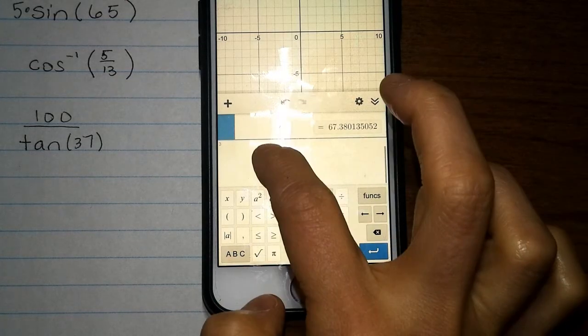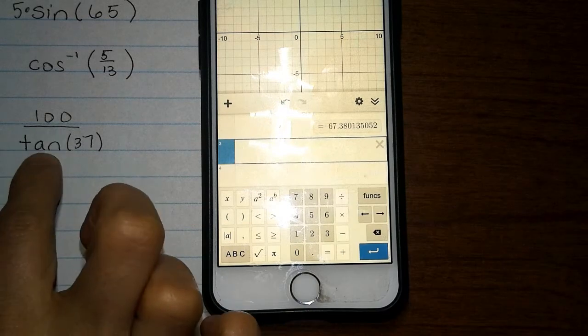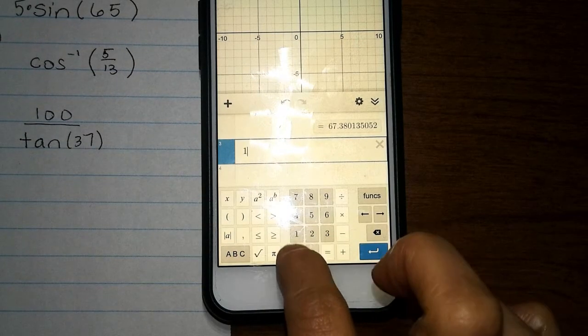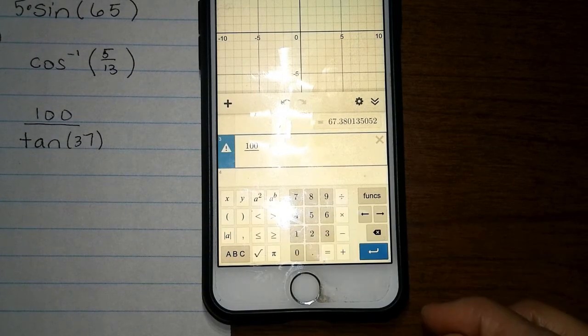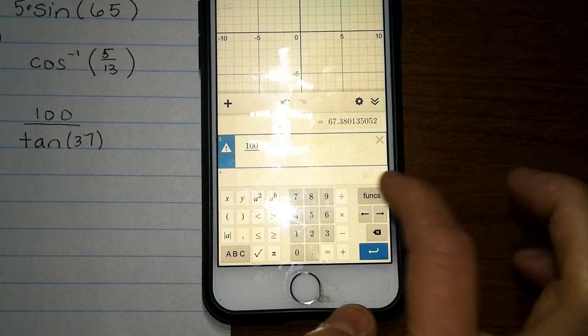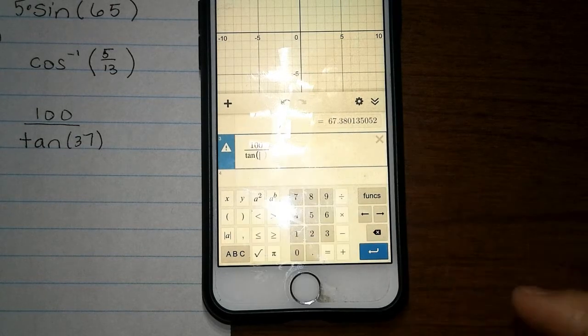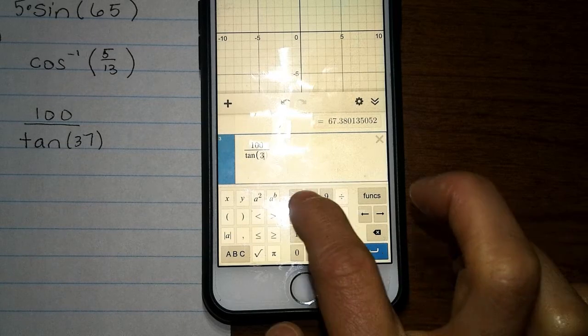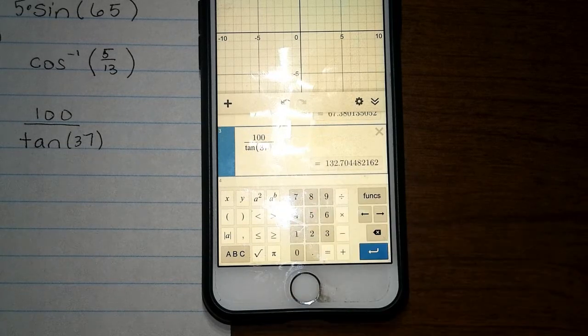And then to do the third one, 100 divided by tan 37, I can say 100 divided by, and then to get tan, I'm going to click on this function thing and say tan 37. And that will be my answer.